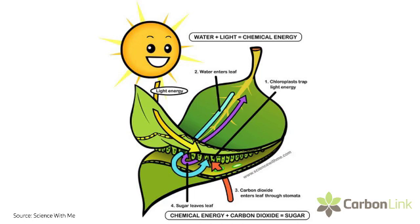Photosynthesis is the driver of that whole system. The photosynthetic process takes in CO2, water, and in the presence of chlorophyll and sunlight, converts that carbon dioxide — removes the carbon molecule, attaches it to other molecules, and turns it into sugars. Then the plant can produce a whole lot of other things from those sugars.